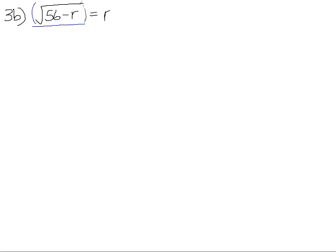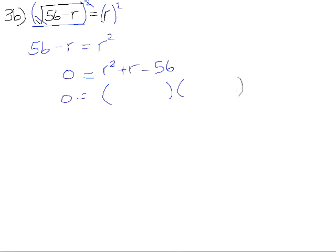So we can start straight away by squaring both sides. When you square a square root, it cancels out. So you're just left with 56 minus r, and r squared is r squared. It's a quadratic equation, so it's solved by getting the equation equal to 0. So we now need to factorize that trinomial, the factors of 56.